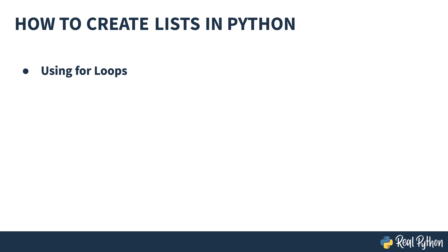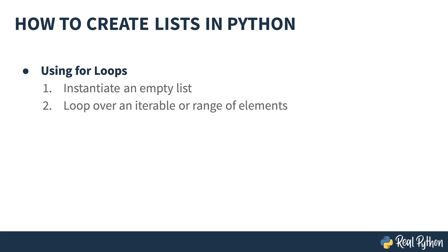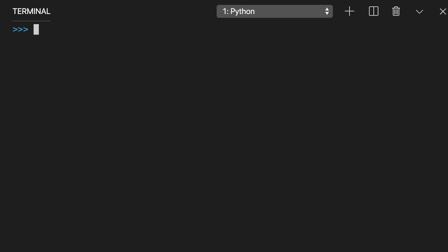One way to create lists in Python is using loops, and the most common type of loop is the for loop. You can use a for loop to create a list of elements in three steps: step one is instantiate an empty list, step two is loop over an iterable or range of elements, and step three is to append each element to the end of the list. If you want to create a list containing the first 10 perfect squares, then you can complete these steps in three lines of code.